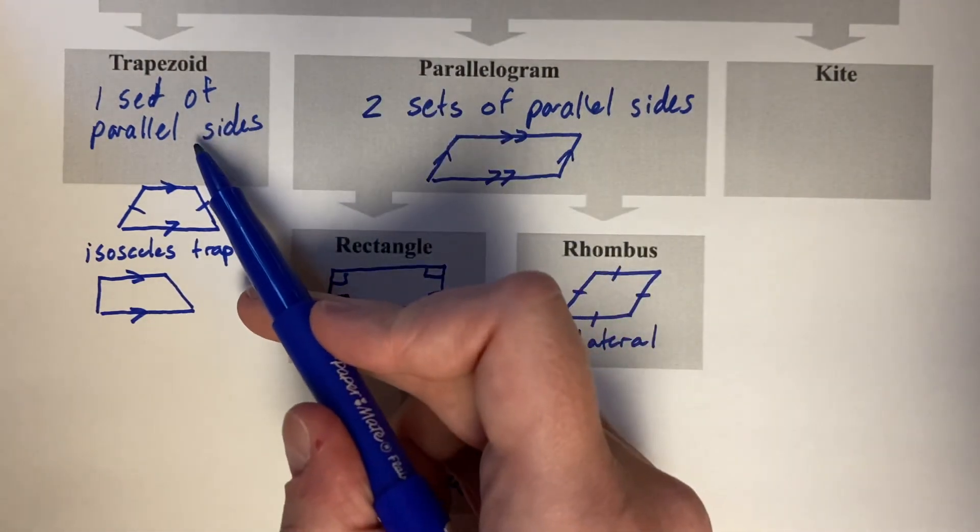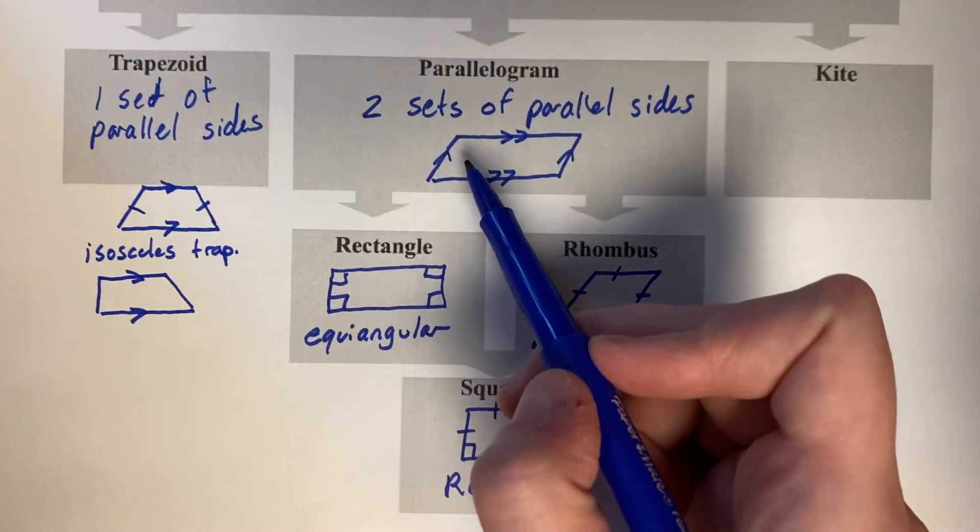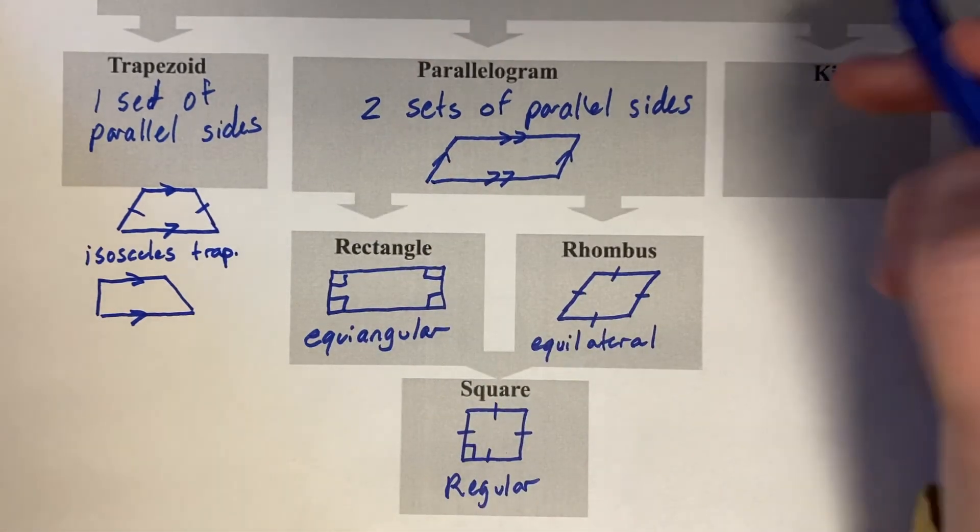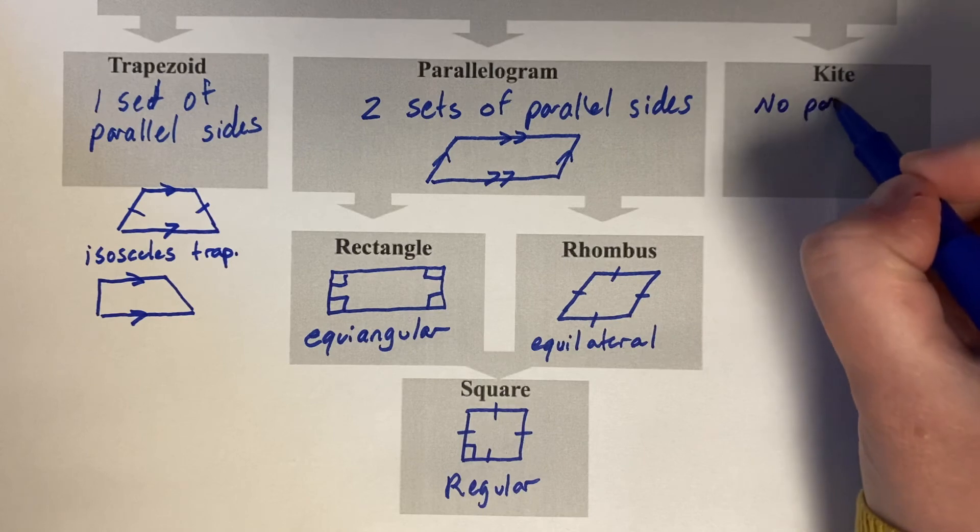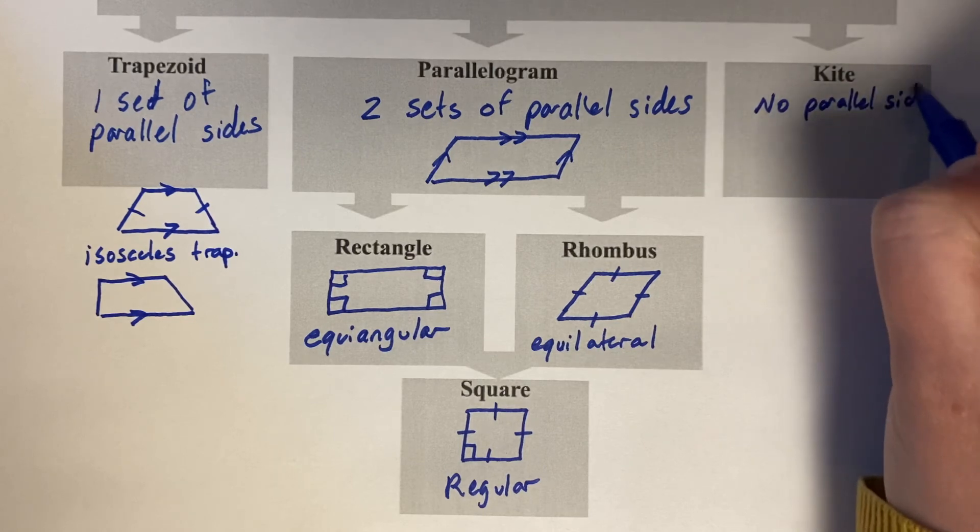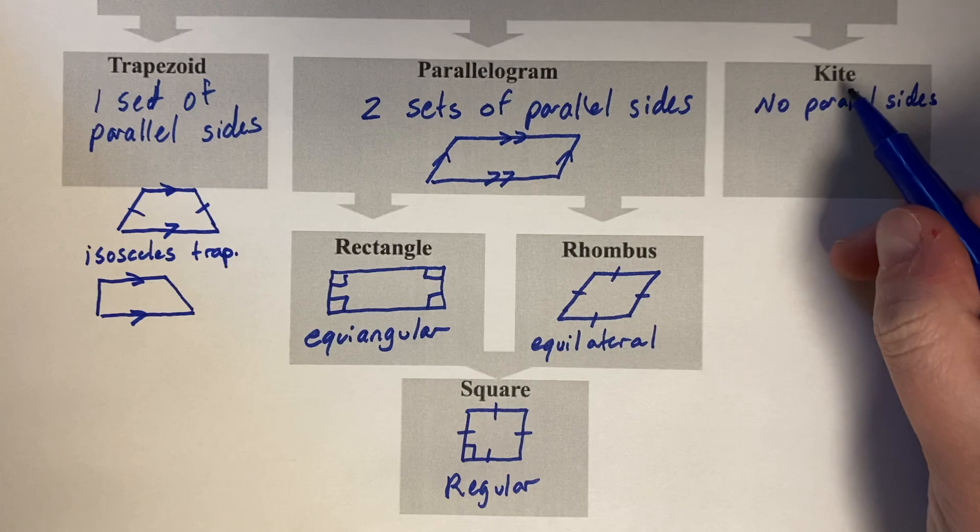So that was one set of parallel sides, two sets of parallel sides. And now our last category would be no parallel sides in the world of parallelogram. And it's called a kite.